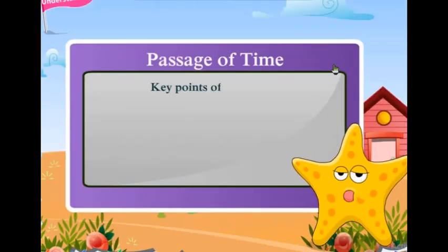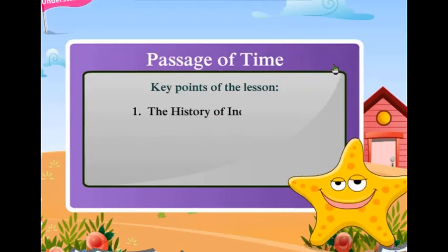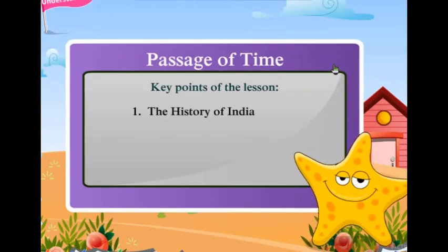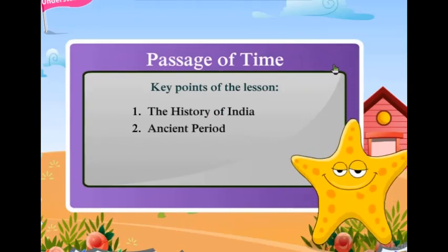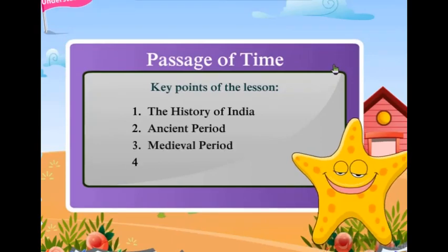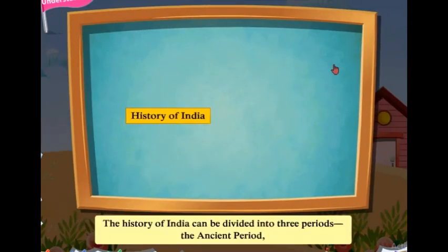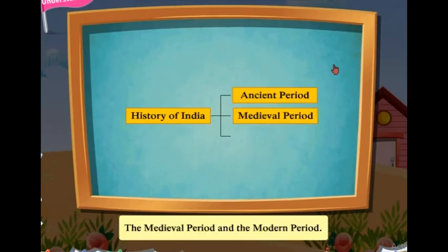The key points of this lesson cover the history of India across three periods: the ancient period, the medieval period, and the modern period. The history of India can be divided into these three distinct periods.